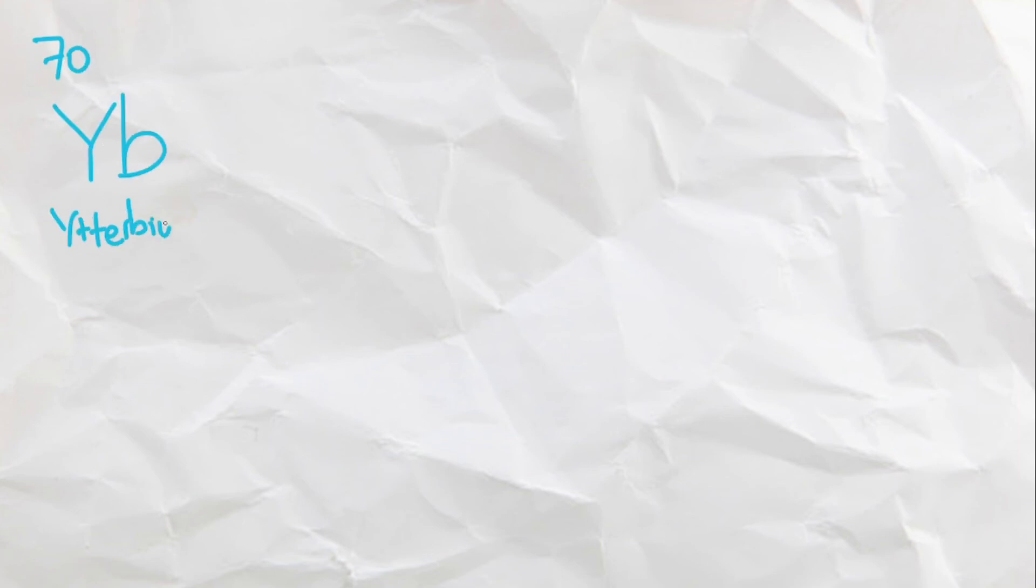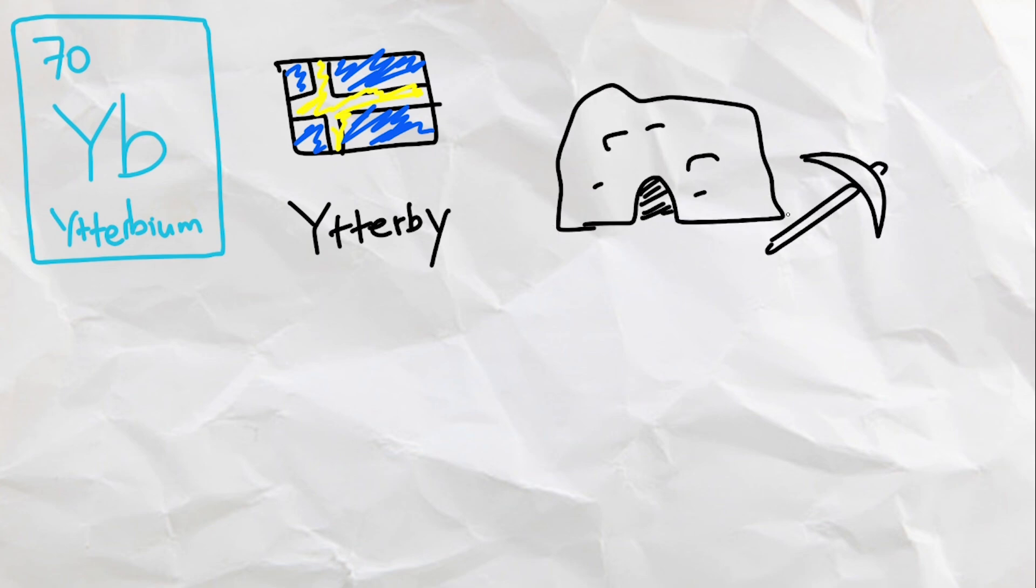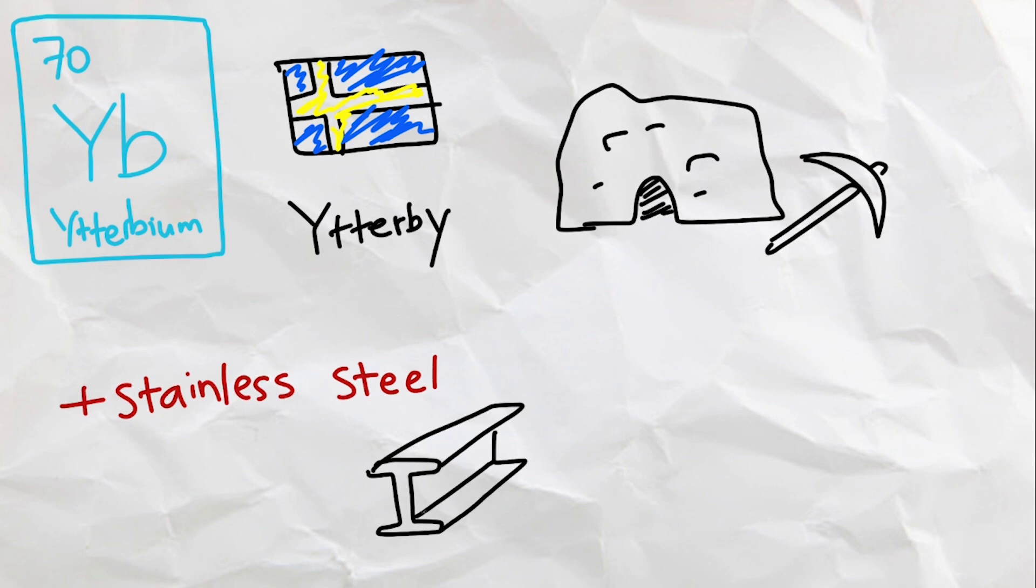And lastly, we have Ytterbium, an element named after a village in Sweden, Ytterby, where it was first found in a quarry. It doesn't have too many uses, as its main use is for refining and alloying with stainless steel.